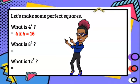What is 8 squared? So again, that number by itself. 8 times 8, which is equal to 64.